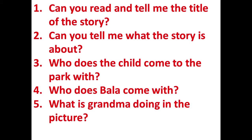Who does the child come to the park with? In the story, children, there is a child — there is one boy. He comes with someone. Who does he come to the park with? Who does Bala come with? Bala comes with two people to the park. Give the answer to the person who is assisting you.